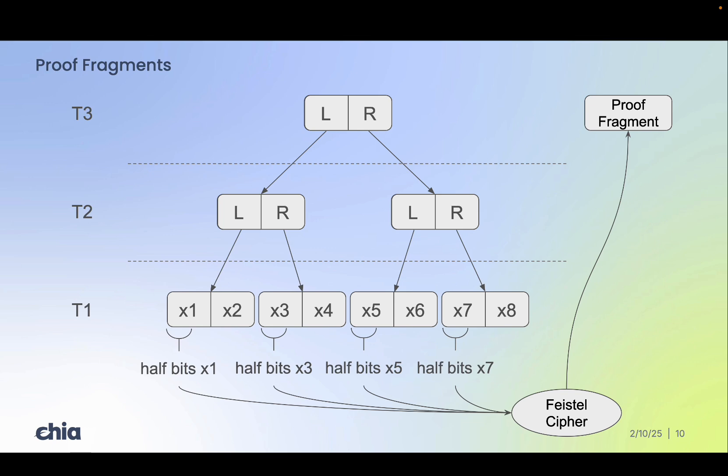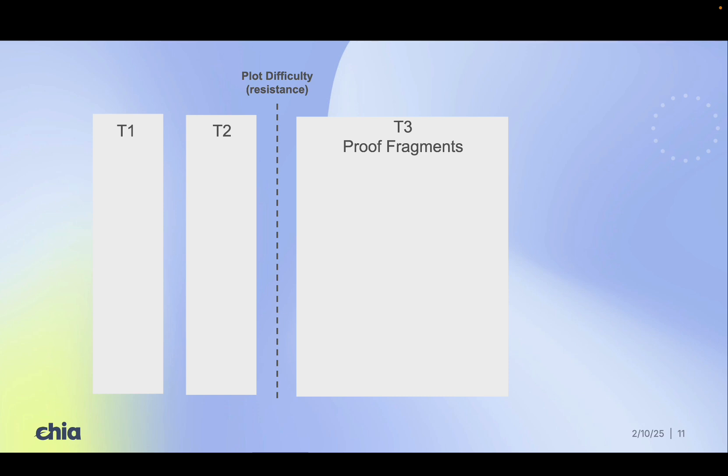We then encrypt these bits through a FISA cipher to form the proof fragment. So at this point, we have proof fragments in T3, and T1 and T2 are discarded since now they act as a cost secured path to T3.